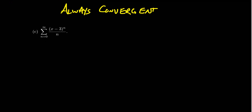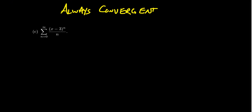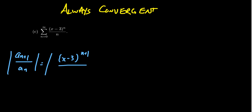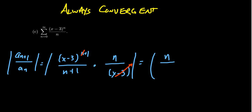Looking at a third example: take the series from N equals 0 to infinity of (X minus 3) to the N over N. Using the ratio test, we look at the limit of A_(N+1) over A_N. This gives (X minus 3) to the (N+1) over (N+1), times N over (X minus 3) to the N. The (X minus 3) to the N cancels, and we can rewrite this as N over (N+1) times the absolute value of X minus 3. When doing these calculations you'll always end up with an absolute value of the centered expression — you should expect that.